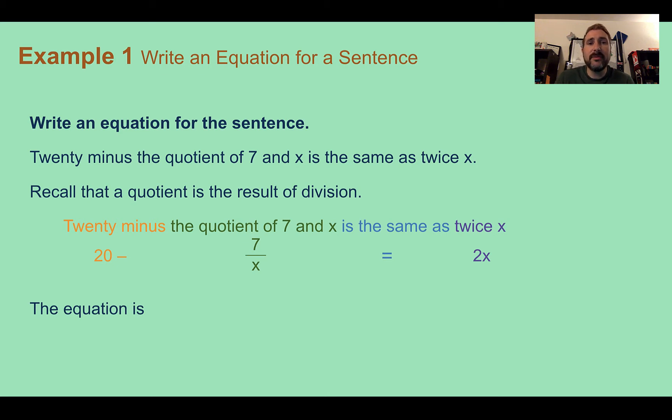Is the same as, there's our equal sign, and twice x. So if we put it all together, we would end up with an equation of 20 minus 7 over x equals 2x.